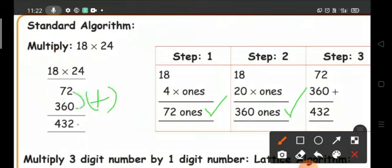2 plus 0 equals 2. Then 7 plus 6 equals 13. Write 3 and carry forward 1 to this place. 1 plus 3 equals 4. So the answer is 432.